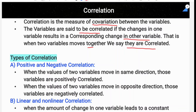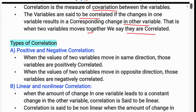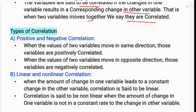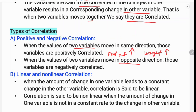There are different types of correlation. The first is positive correlation and negative correlation. When the values of variables move in the same direction, those variables are positively correlated. For example, food intake and weight are positively correlated — when food intake increases, weight also increases.